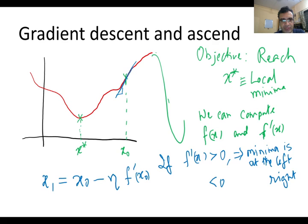So that's a gradient descent algorithm. In gradient ascent algorithm, it's just the opposite. Instead of the minus sign, you will have a plus sign, and that will take you to the local maxima.